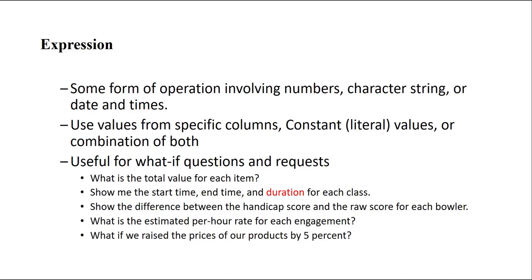We call these operations expressions. An expression is some form of operation that involves numbers, character strings, and date and time. We do some operations based on the columns inside the tables. Character strings like first name, last name, address — all of them are in the category of character strings. In expressions we can also use columns where data is stored, plus constant values, or a combination of both.